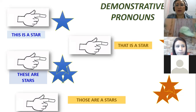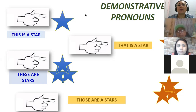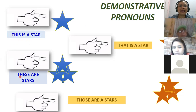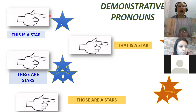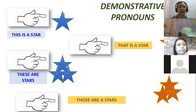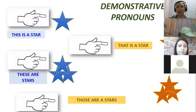Even with your microphones muted, I want us to pronounce together at home so we don't forget. Let's go with the spotlight. This — this is a star. These — these are stars. Now let's go here: that is a star. Those are stars. Very good, that's the way it is. And you have the video on the platform to continue pronouncing the right way.